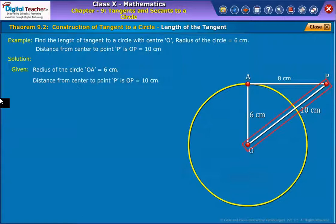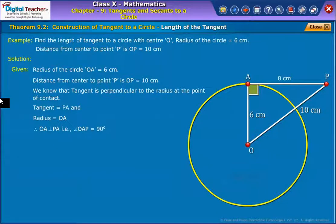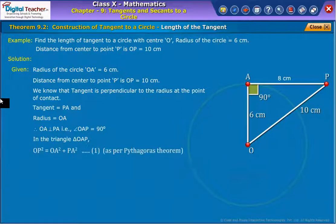Distance from center to point P is OP equal to 10 cm. We know that tangent is perpendicular to the radius at the point of contact. Here from the figure we observe that tangent is equal to PA and radius is equal to OA. Thus OA is perpendicular to PA. That is angle OAP is equal to 90 degrees. In the triangle OAP, using Pythagoras theorem we obtain equation 1 as shown on screen. Now substitute given values of OA and OP in equation 1.